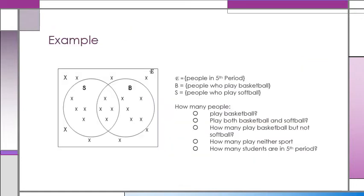For example, our universal set is people in fifth period. B is a set of people who play basketball, and S is a set of people who play softball. What we want to know is, these little X's represent people. How many of them play basketball? So basketball is just this B set right here, so there are 1, 2, 3, 4, 5, 6, 7, 8, 9 people that play basketball.